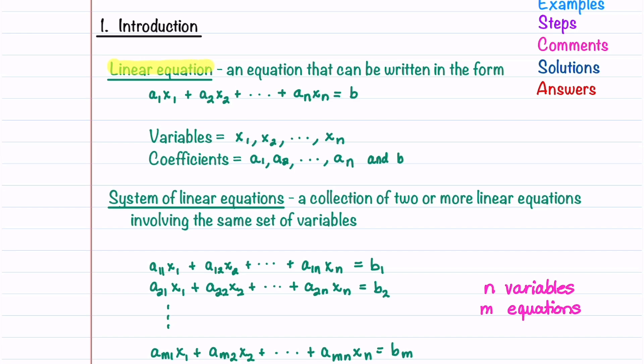A linear equation is an equation that can be written in the form a1x1 plus a2x2 all the way up to anxn equals b. The variables are x1 through xn, and the coefficients are a1 through an as well as b.